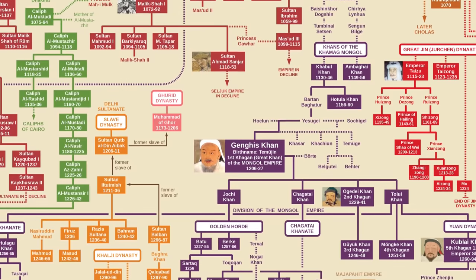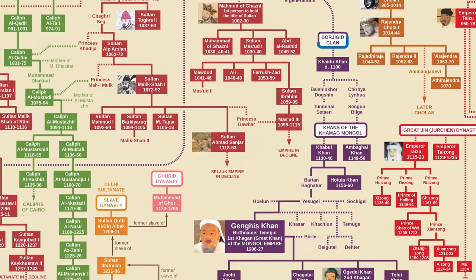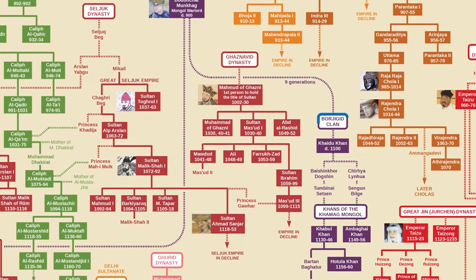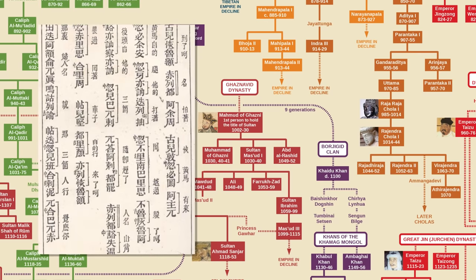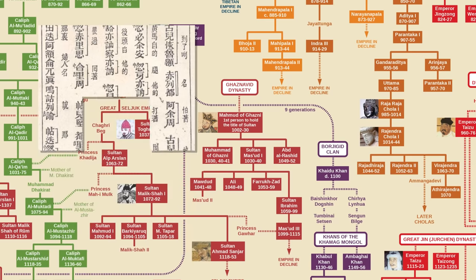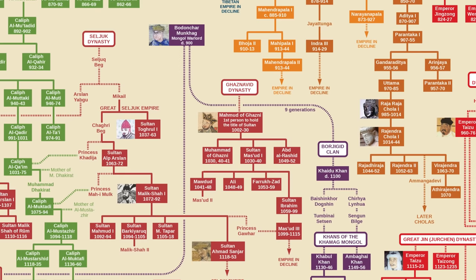Genghis Khan was born Temujin in the Mongol Borjugin clan, which is why his dynasty is often called the House of Borjugin. He traced his ancestry to a warlord named Bodhunchar Munkag who died around 900 CE, though the Secret History of the Mongols traces his lineage some 23 generations back to animal ancestors — namely a deer and a wolf. Everything before Bodhunchar is either legend or straight-up myth.